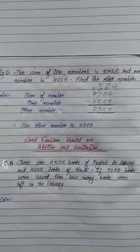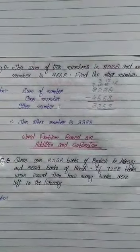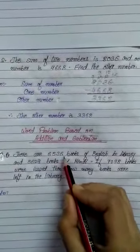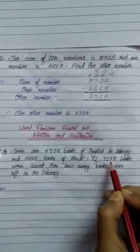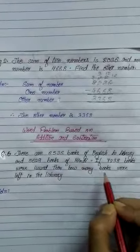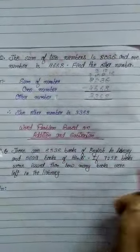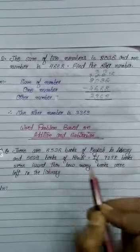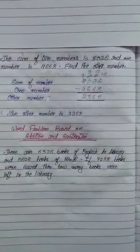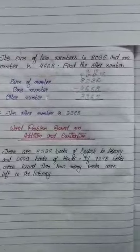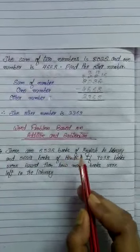Now the second topic is problems based on addition and subtraction together. Question number 6 from your book: there are 6,536 books of English in a library and 5,629 books of Hindi. If 7,298 books were issued, how many books were left in the library? There are 6,536 books of English and 5,629 books of Hindi. 'Issued' means some were taken from the library. We have to find how many books were left. First, we have to add the number of English and Hindi books.